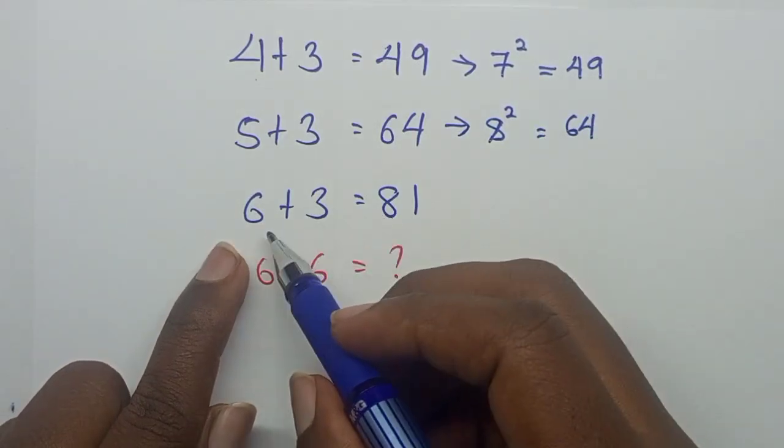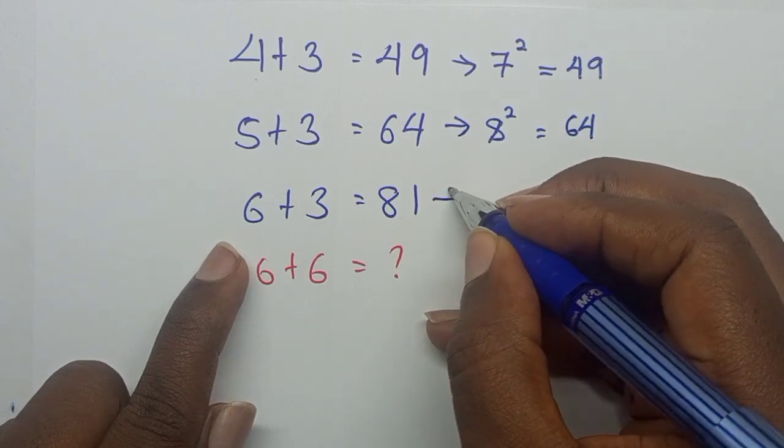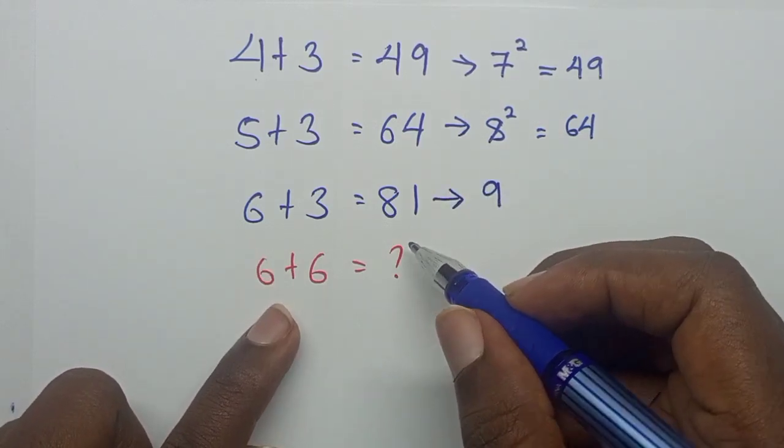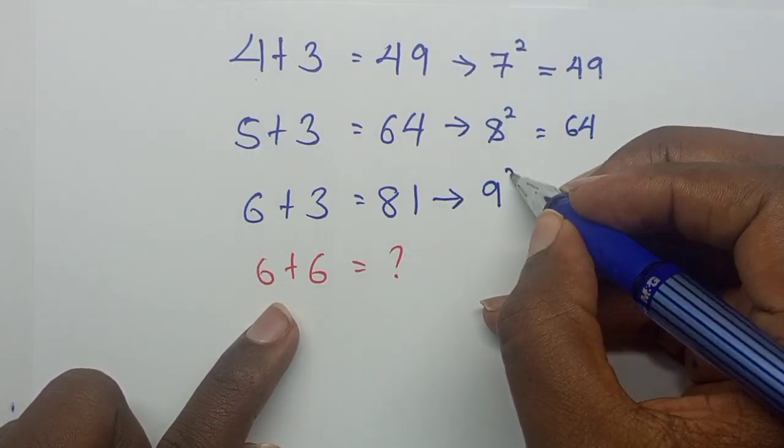Now here, 6 plus 3 gives us 9. And to get 81, they had to square 9.